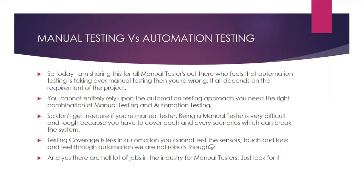Both manual and automation testing have their own significance. Sometimes use cases are so complex that it might take more time to automate rather than manually testing during the release. Organizations typically target at least 60 to 70 percent automation coverage before feeling confident about releasing on a particular timeline. Everyone knows that 100 percent automation is not possible, and there are plenty of jobs available in the industry for both manual and automation testing.